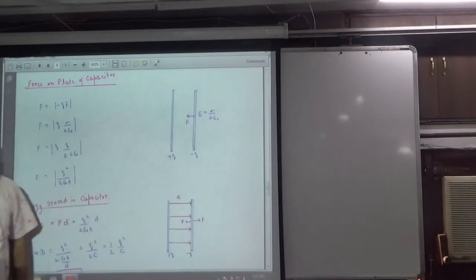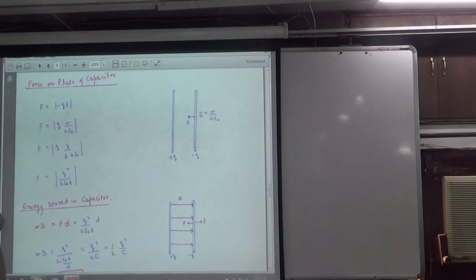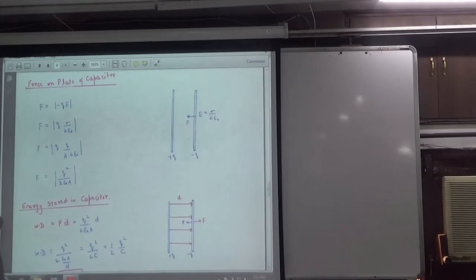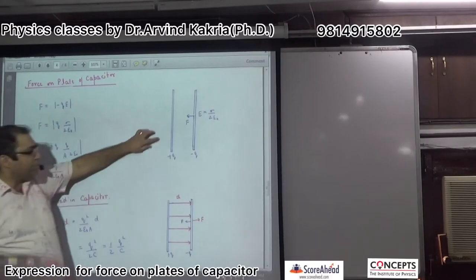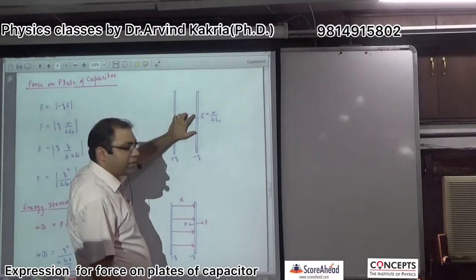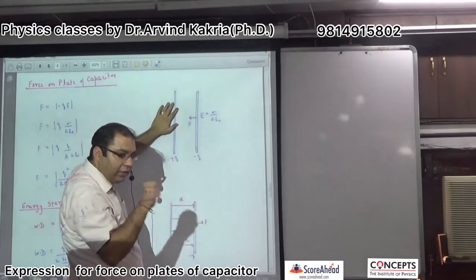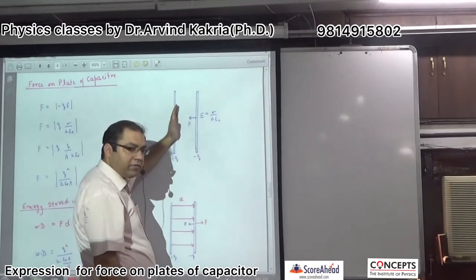This is positive and this is negative. This is positive and this is negative plate. Positive charge will attract this negative plate. So, this is fixed and this is movable.